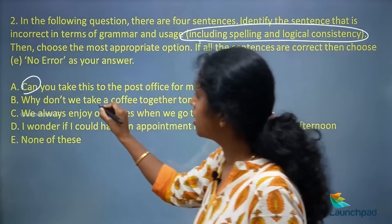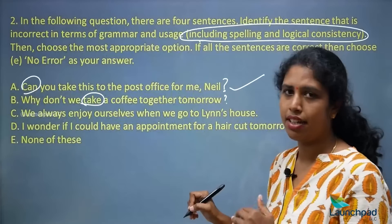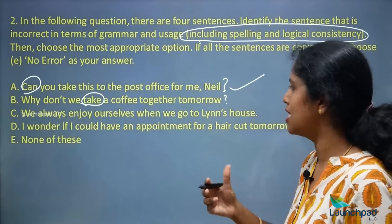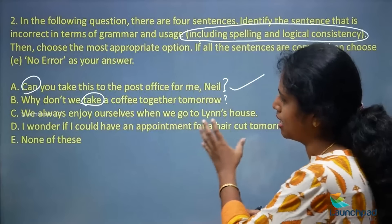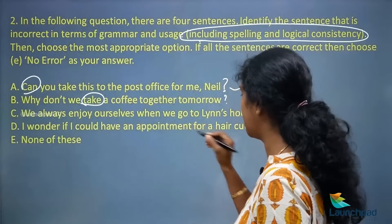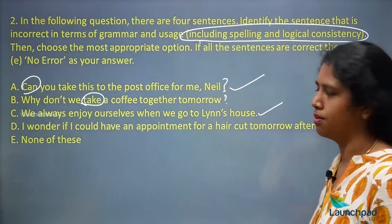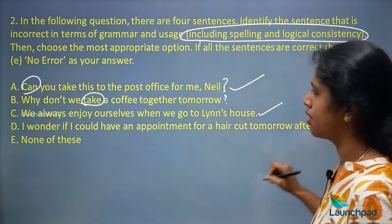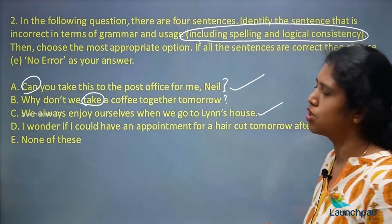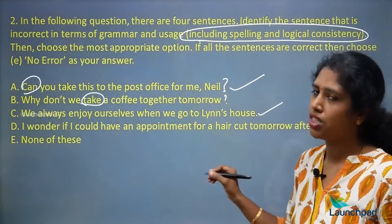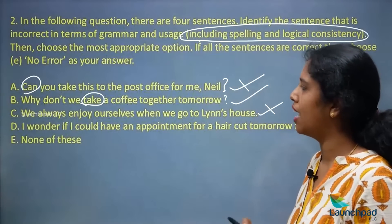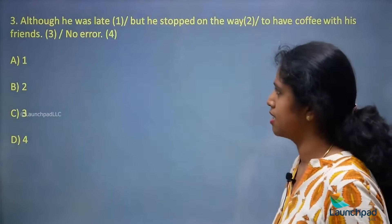So this sentence has an error. The third sentence — 'We always enjoy ourselves when we go to Linthouse' — is also correct. The fourth — 'I wonder if I could have an appointment for a haircut tomorrow afternoon' — is also correct. So the sentence with the error is the second one. Hence the right option is B: 'Why don't we take a coffee together tomorrow' should be 'have a coffee.'